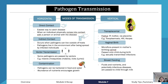Vector transmission involves insects such as mosquitoes, which cause malaria, and ticks, which cause Lyme disease — they can pass on the disease. Finally, contamination: pathogens can be harbored in food and water, and the abundance of nutrients in food and water encourages their growth.